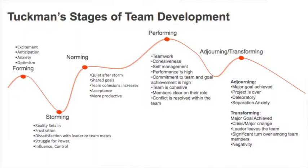There are several steps to launching an effective team. One is team members get to know each other better. Two, the team's purpose is clarified. Three, the team has norms. Four, how decisions get made is agreed upon. Five, the team project is identified. Six, team roles and responsibilities are defined. Seven, a communication plan is created. And eight, a project plan including a timeline is created.